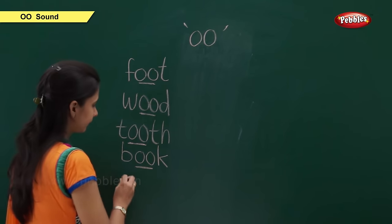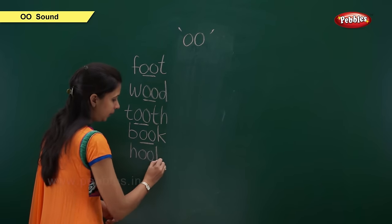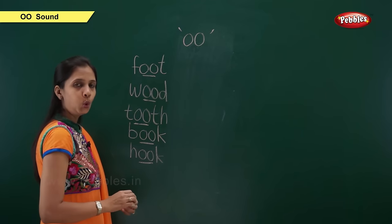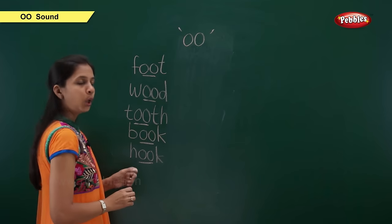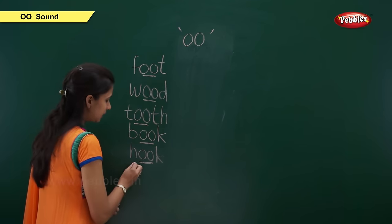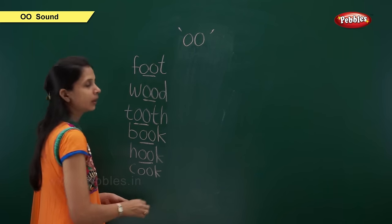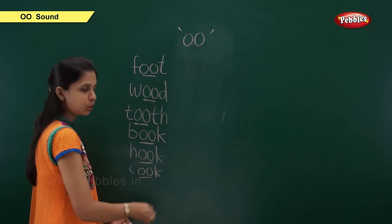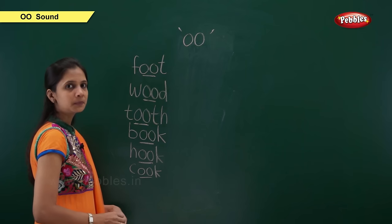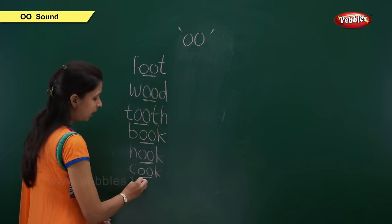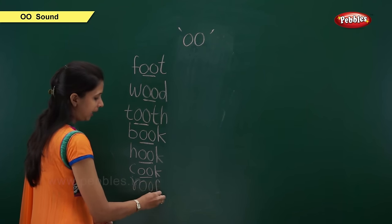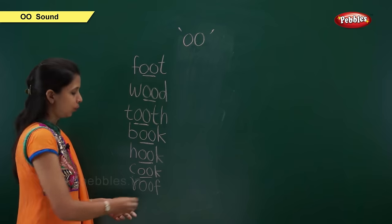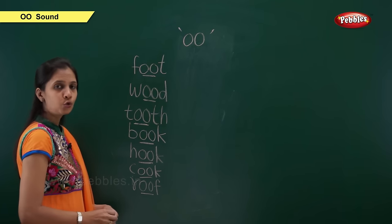Next is: H-O-O-K, hook. Here, this OO sound is short. So, hook. Next is: R-O-O-F, roof. Here also, this OO sound is short. So, roof.